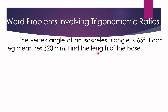First, we need to illustrate our triangle. So we draw an isosceles triangle with markings showing the two congruent sides. The vertex angle of the isosceles triangle is 65 degrees — that is this angle at the top. So let us write 65 degrees here at the vertex.